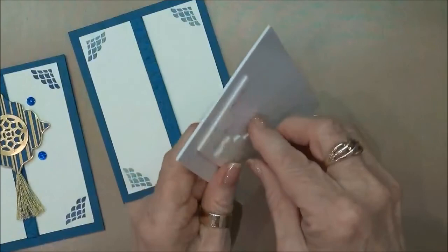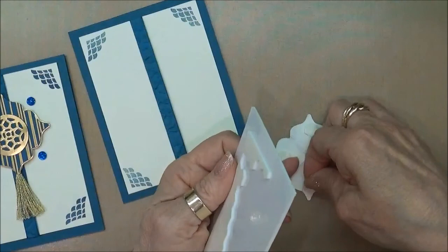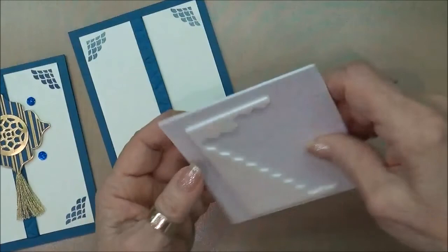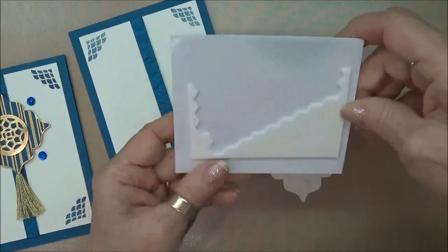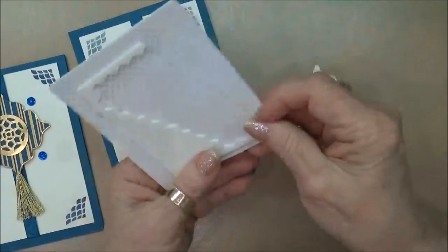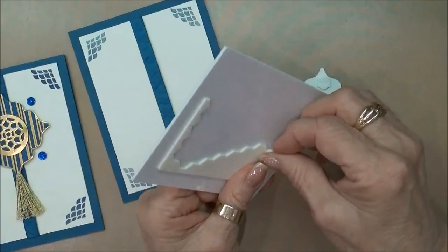Now we're going to apply dimensionals to the back. This new Eastern Palace suite of products—in the beginning I thought it's just a medallion, I don't think there's anything very different I can do with that. But I discovered that once I got my hands on it and started playing with it, what a great product it is.